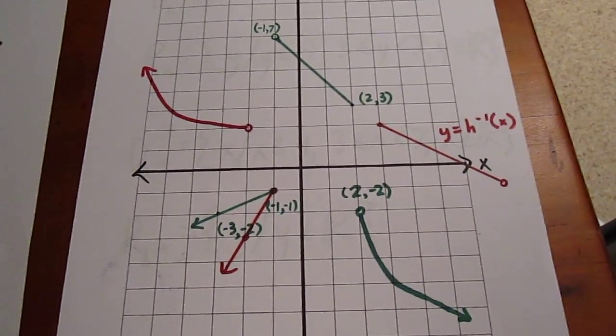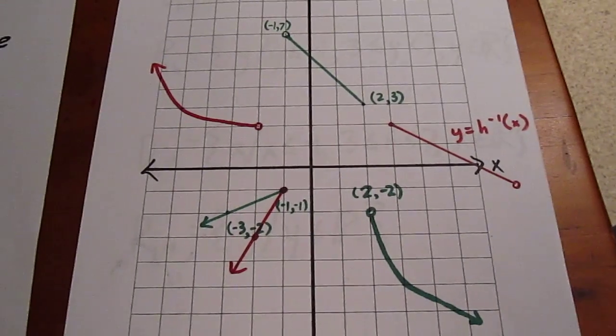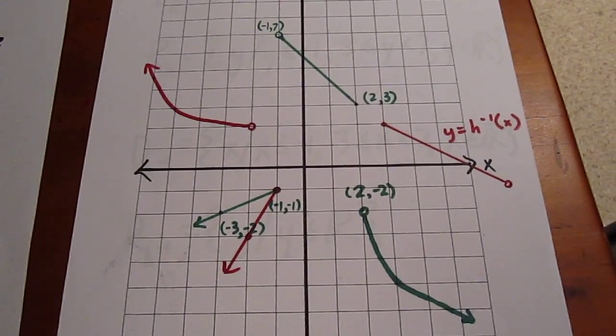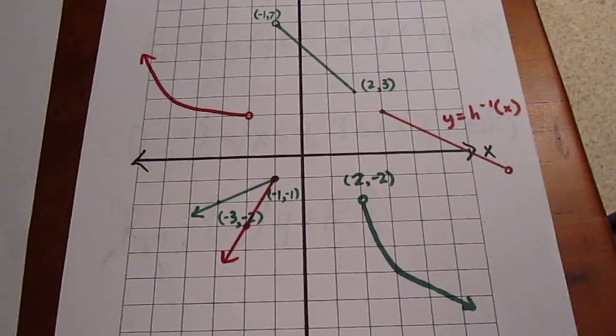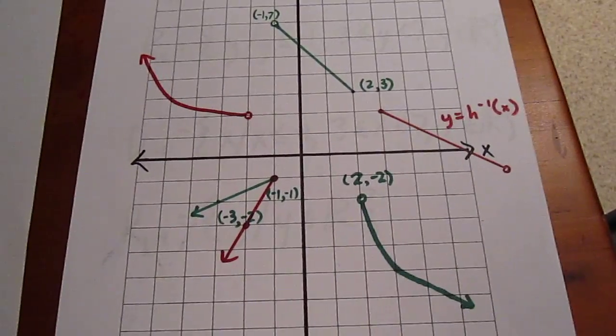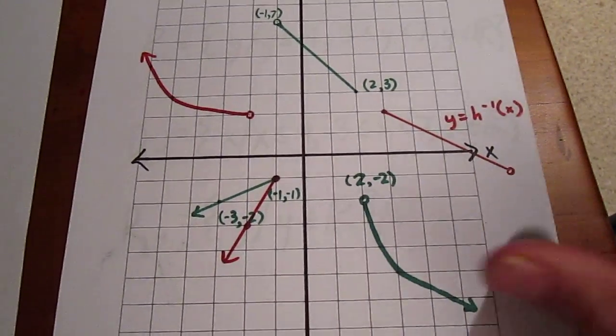Clearly the inverse is not a function. The original is — it would pass the vertical line test. The red curve, the inverse, would not.